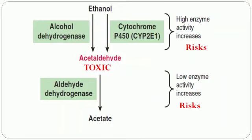Ethanol is converted to acetaldehyde, and acetaldehyde is converted to acetate. There are two different enzymes which can carry out the first reaction. Ethanol is more commonly converted to acetaldehyde by alcohol dehydrogenase. Under high alcohol concentration, a second enzyme becomes activated which is found in the microsomes — cytochrome P450 CYP2E1. This enzyme's activity increases cancer risk.